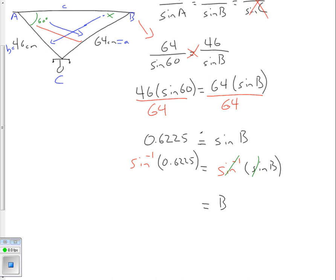I've now got my angle all by itself. Now I need to figure out what is sine inverse of 0.6225. So I'm going to do sin^(-1) of 0.6225, and that's going to equal approximately 38.5 degrees.